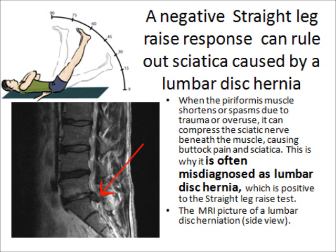Lumbar disc herniation is when the spinal disc protrudes out into the spinal canal, compressing onto one of the lumbar nerves and sending pain and tingling down one side of the leg. An experienced clinician can usually rule it out using a simple test called the SLR — straight leg raise. If the patient can raise both legs to the same level, that means the sciatic pain is not caused by the protruded disc; the compression is not in the spinal canal.